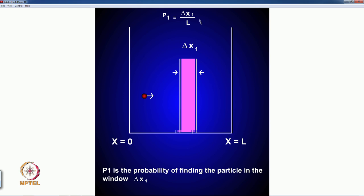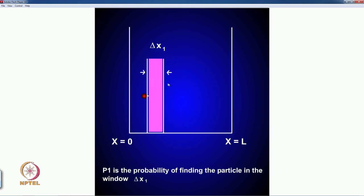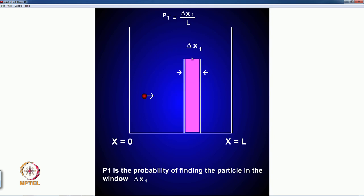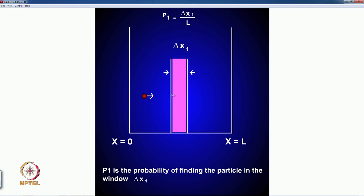That is what is meant by this particular flash movie telling you that the probability p1 for an interval of Δx, if you are locating the particle in that interval across this, it is uniform.